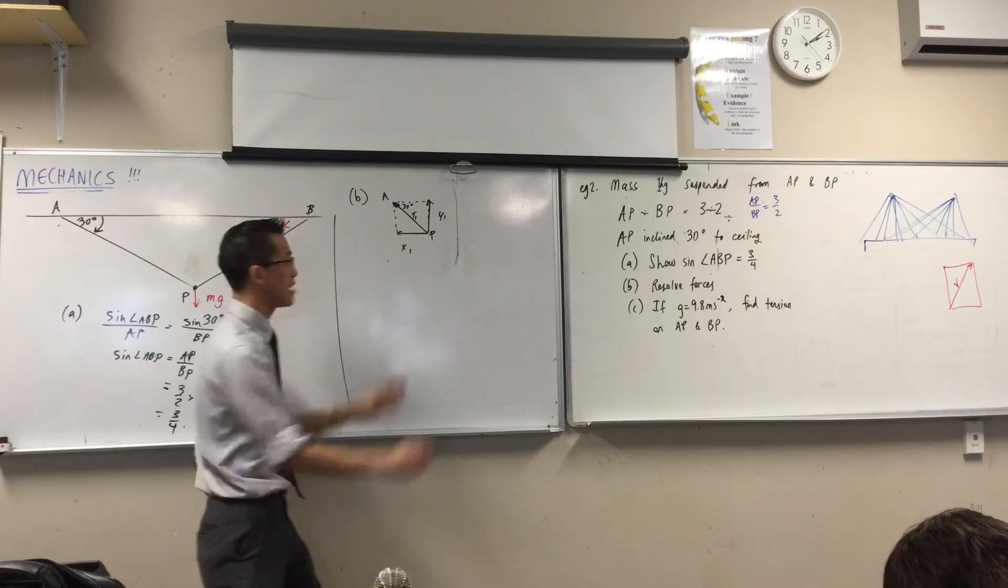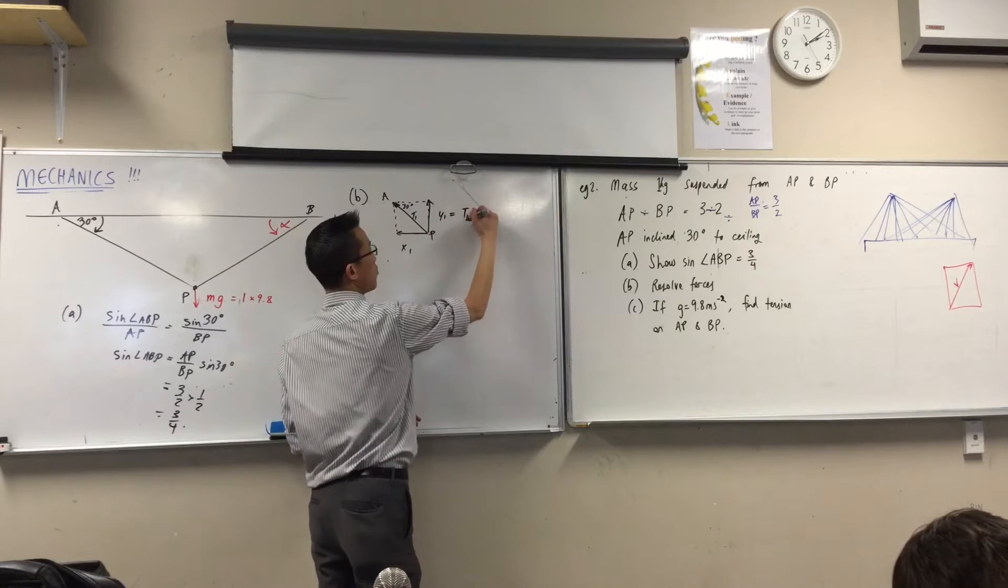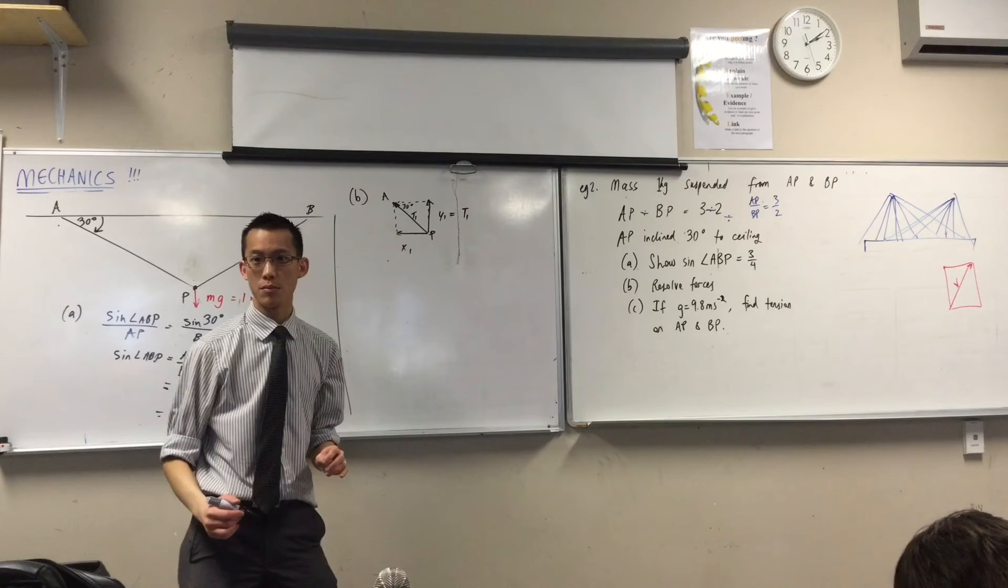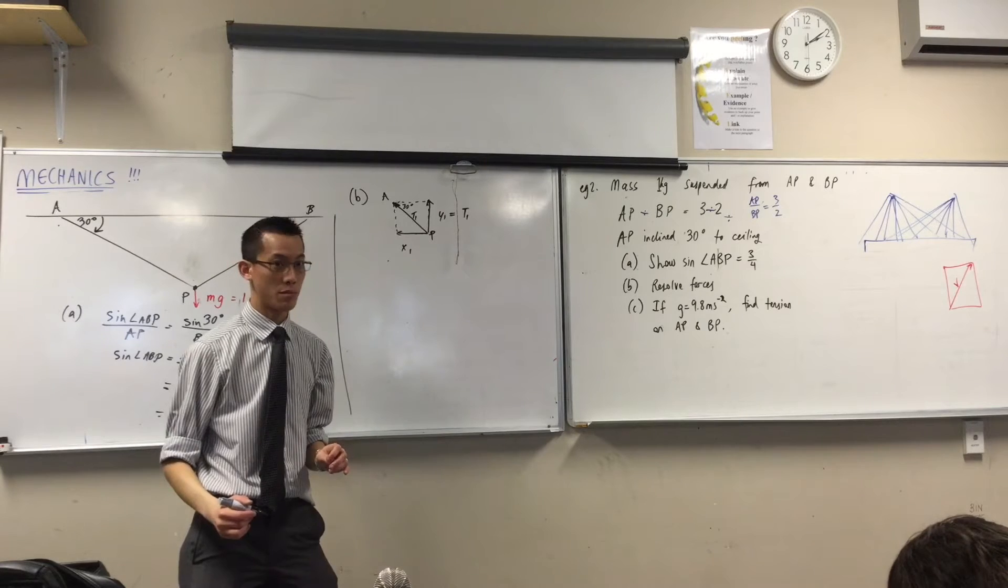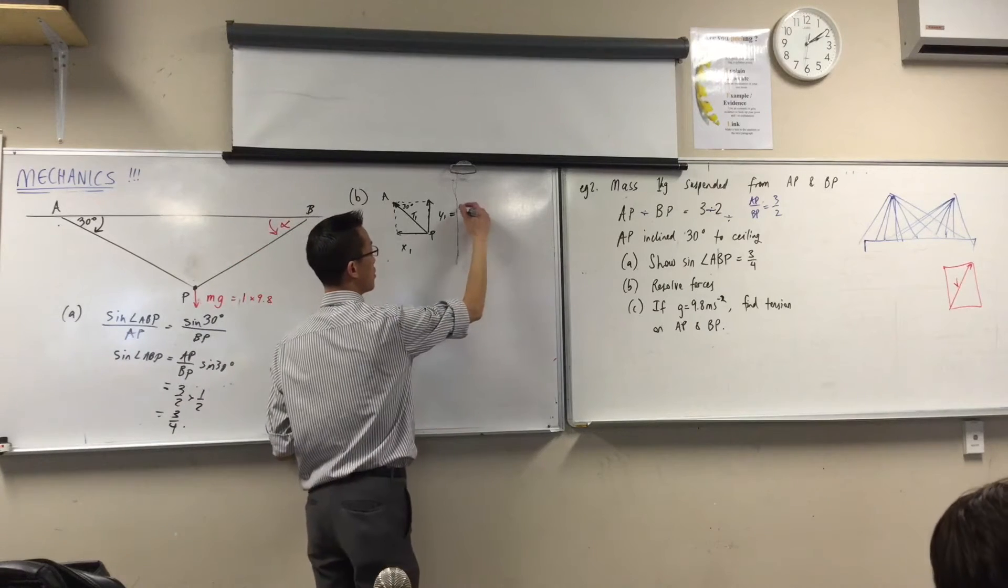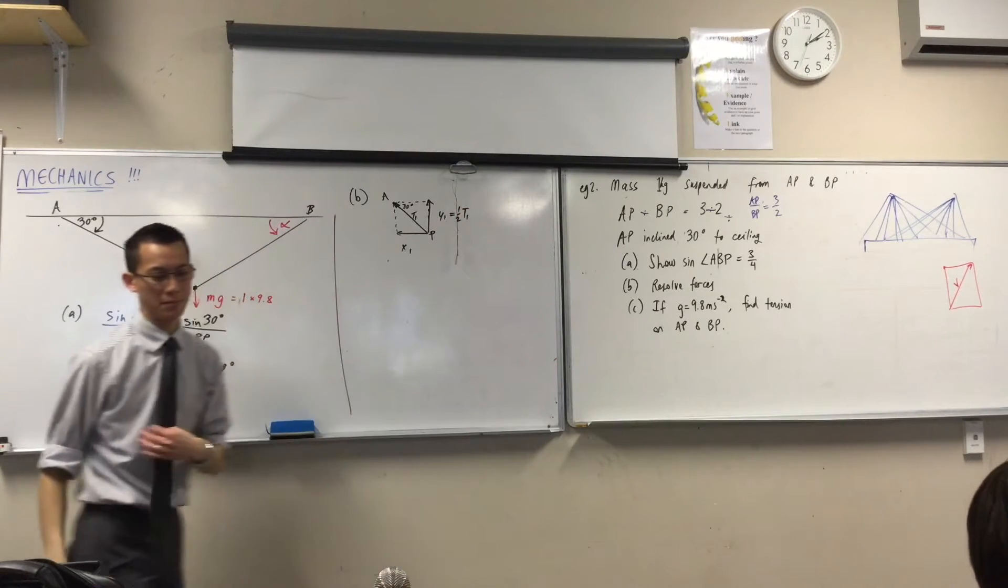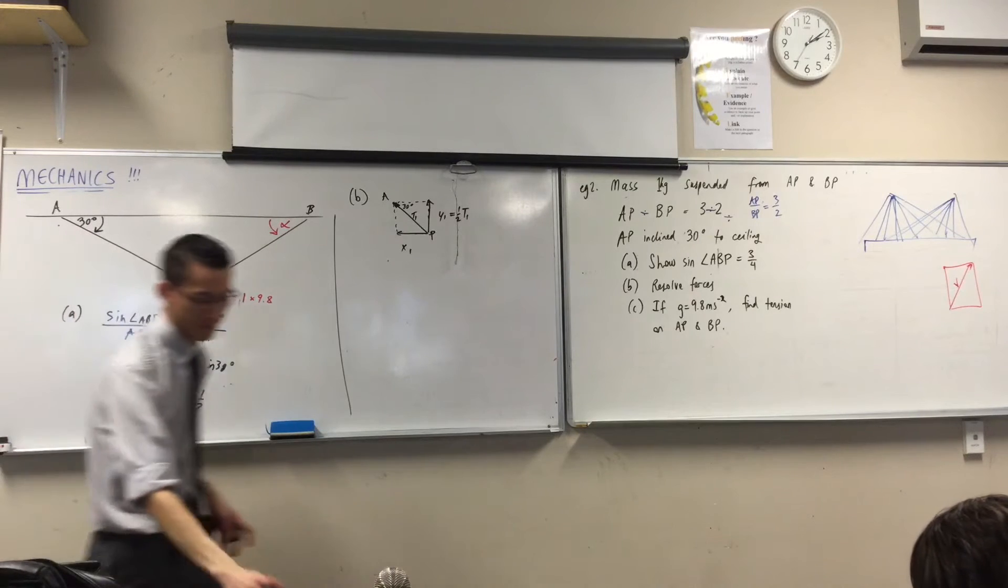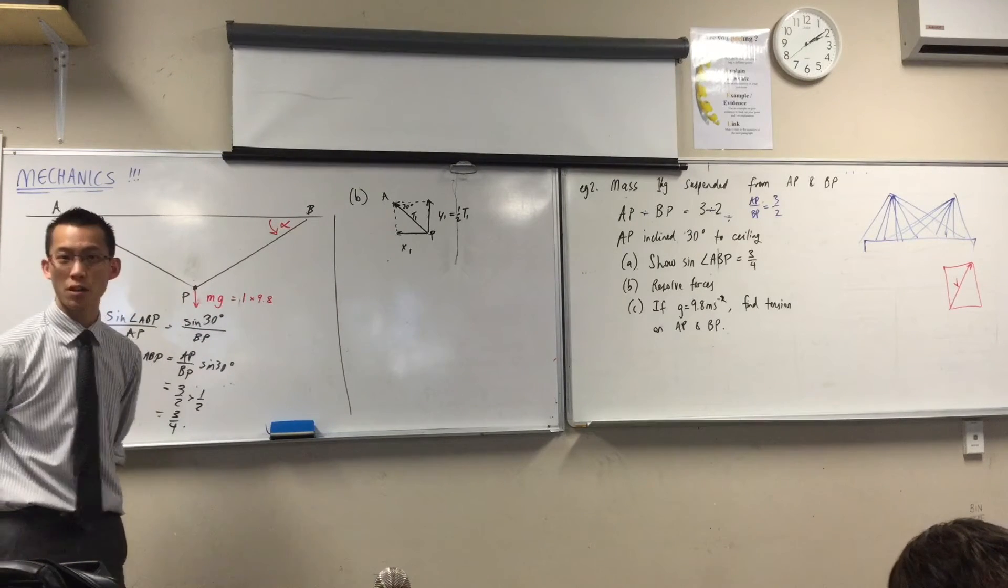Y1 on T1, so just rearranging, this is going to be T1 times sine 30, which is a half. So this is actually just a half T1. Does that make sense? Okay, that's fine. What about what's happening on the bottom?